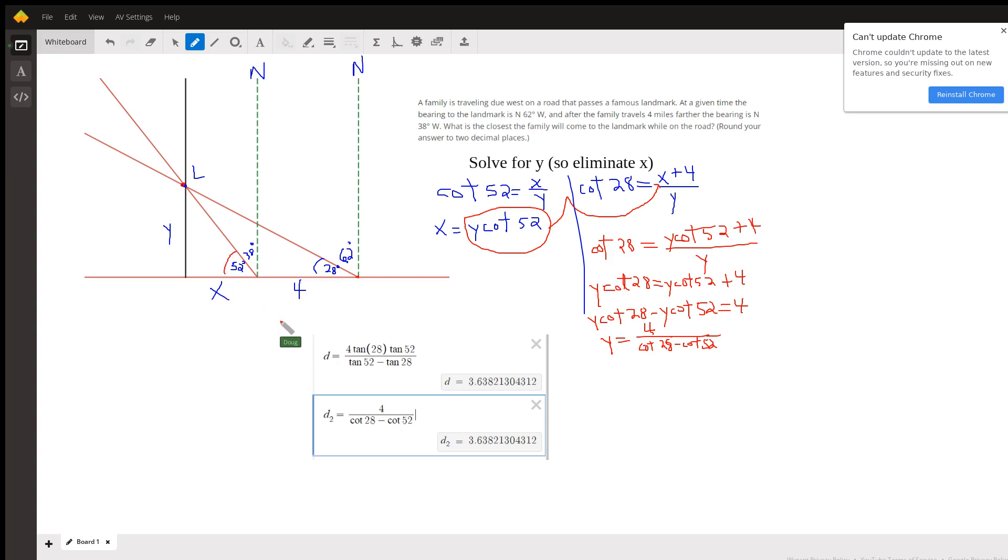So we actually have two triangles with two unknowns. This distance x is not known. This distance y is what we're trying to find—that's the shortest distance, the closest they'll ever get to the landmark, the perpendicular distance from this road that they're heading west on.